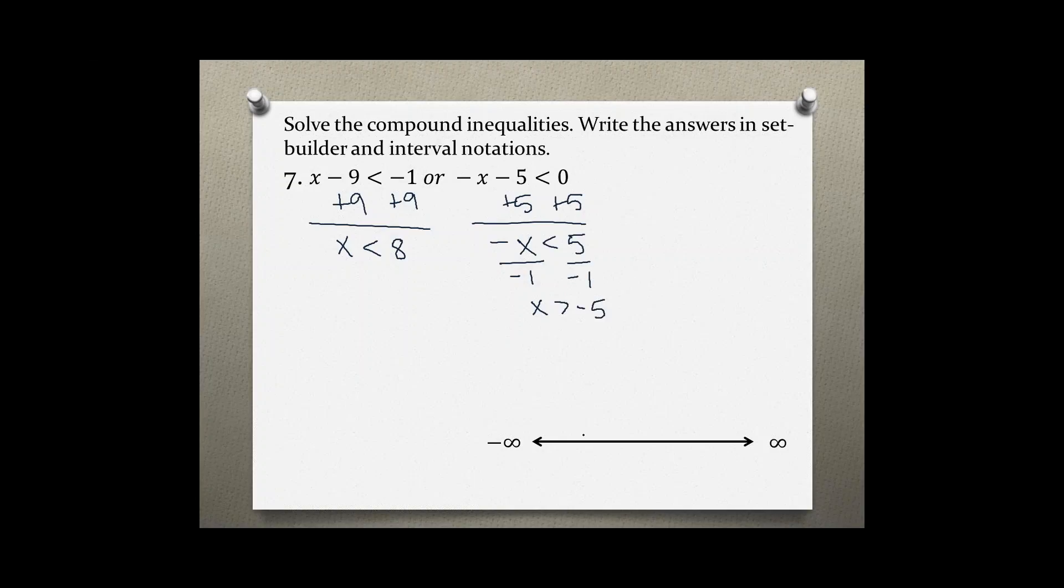So let's graph our solution. So we have negative five and eight. X is less than eight, so we use a parentheses and shade less than eight. X is greater than negative five, we use parentheses and shade greater than negative five.